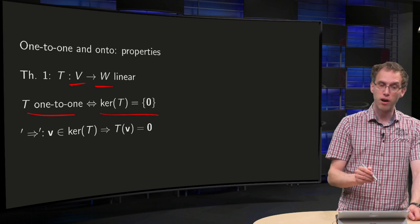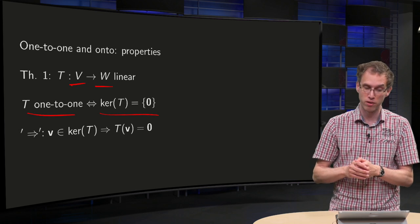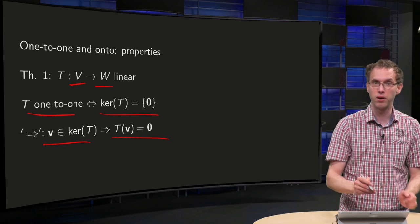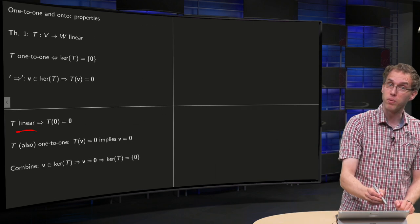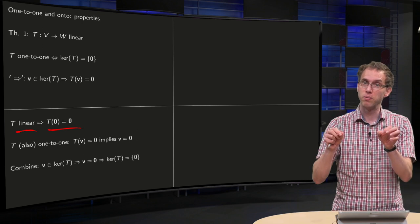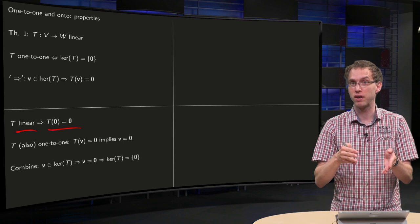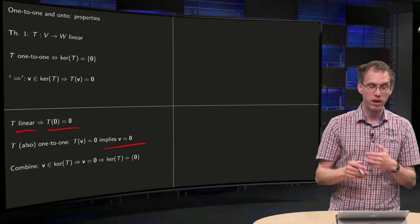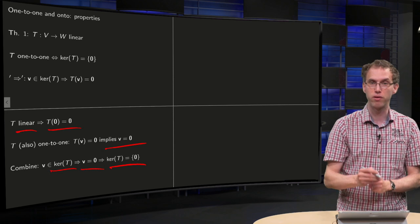We have to prove two implications. First, going from left to right: if T is one-to-one, then the kernel of T is only the zero vector. Take some arbitrary vector V in the kernel of T. Then we know T of V equals zero. We have to show this only holds if V is zero. But T is linear, so we know T of zero equals zero. Now, the transformation by assumption is one-to-one, so only one vector can map to zero. Zero is already mapping to zero, so if you have another vector T of V mapping to zero, then that vector V also has to be zero. Therefore, if V is in the kernel of T, V must be the zero vector — the kernel of T consists only of the zero vector.